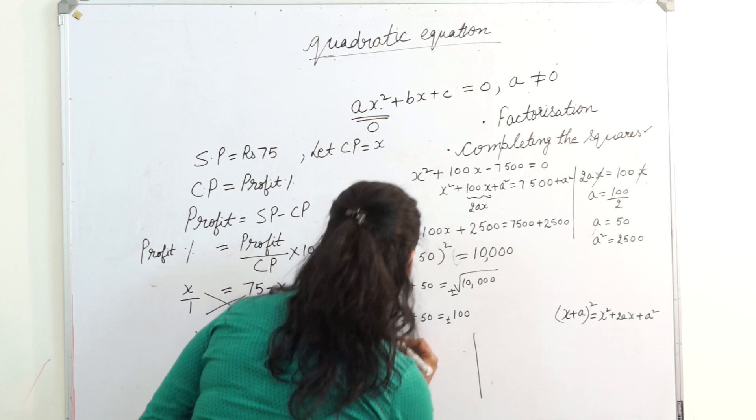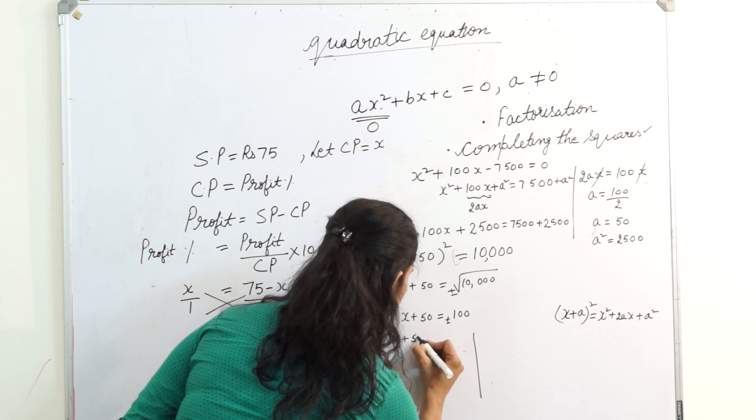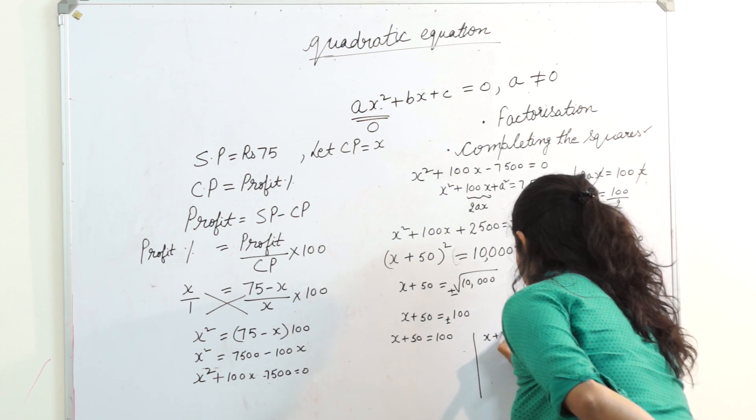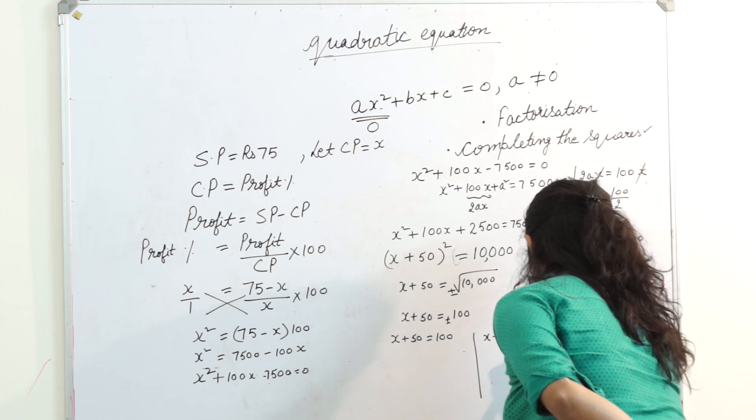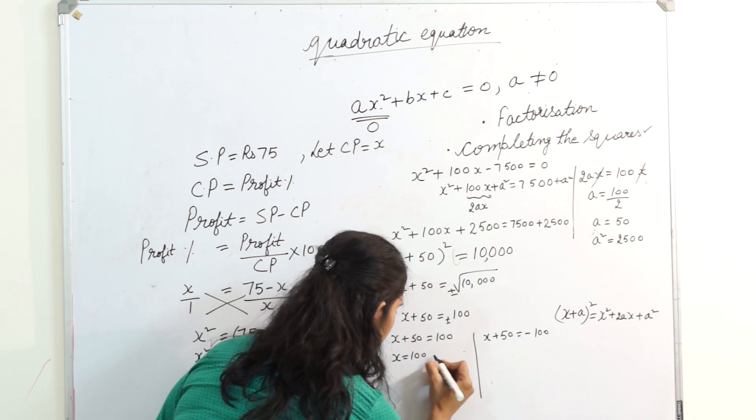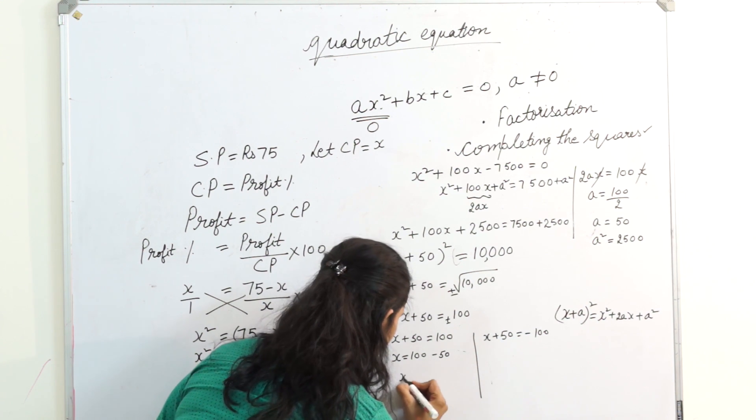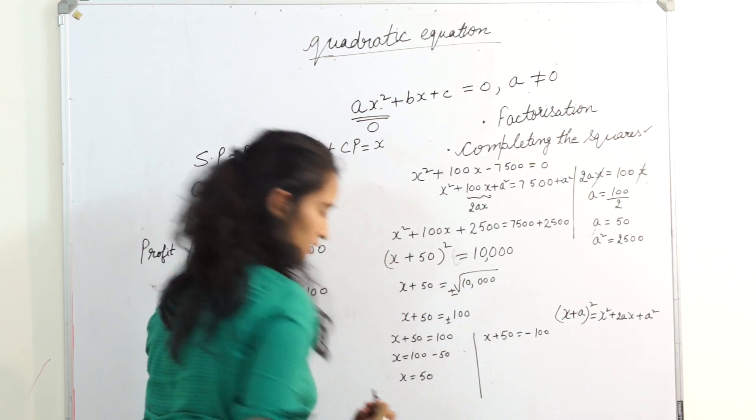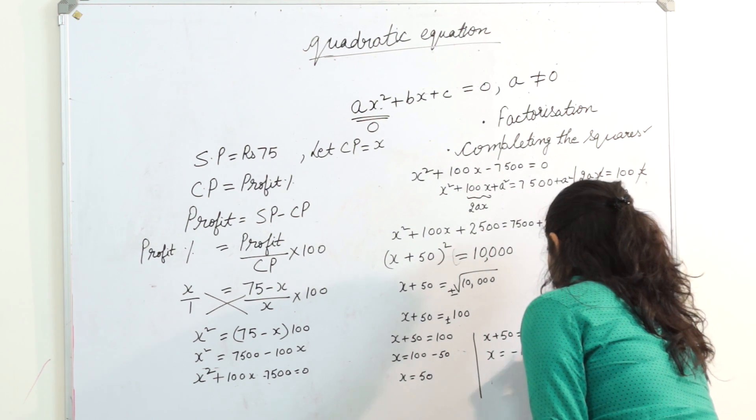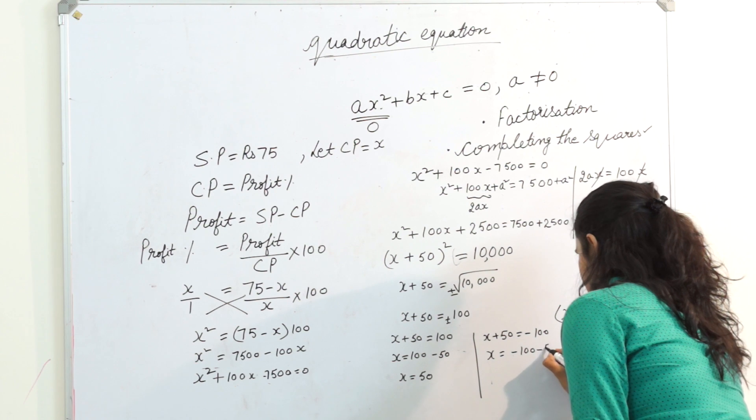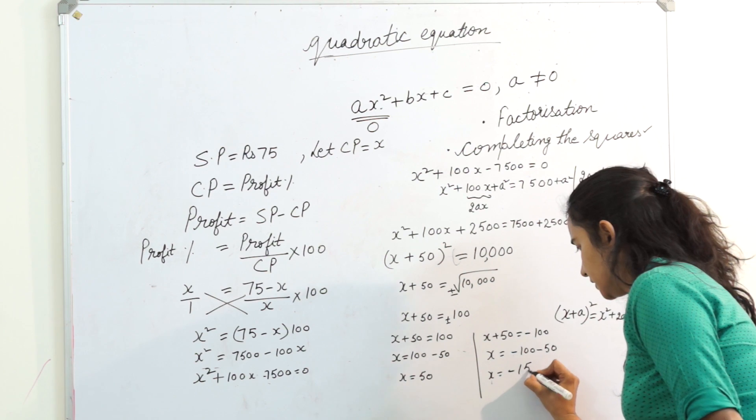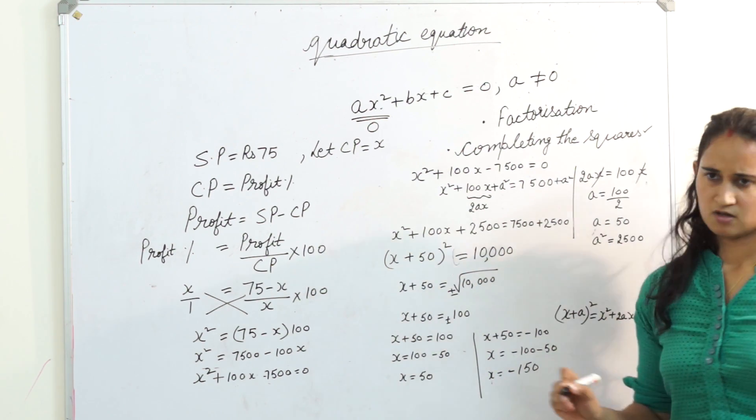So I have two answers. x plus 50 equals plus 100, and x plus 50 equals minus 100. Let's solve it. x equals 100 minus 50, so x equals 50. On the other side, I got x equals minus 100. Taking this plus 50 on the other side, it becomes minus 50. So x equals minus 150.